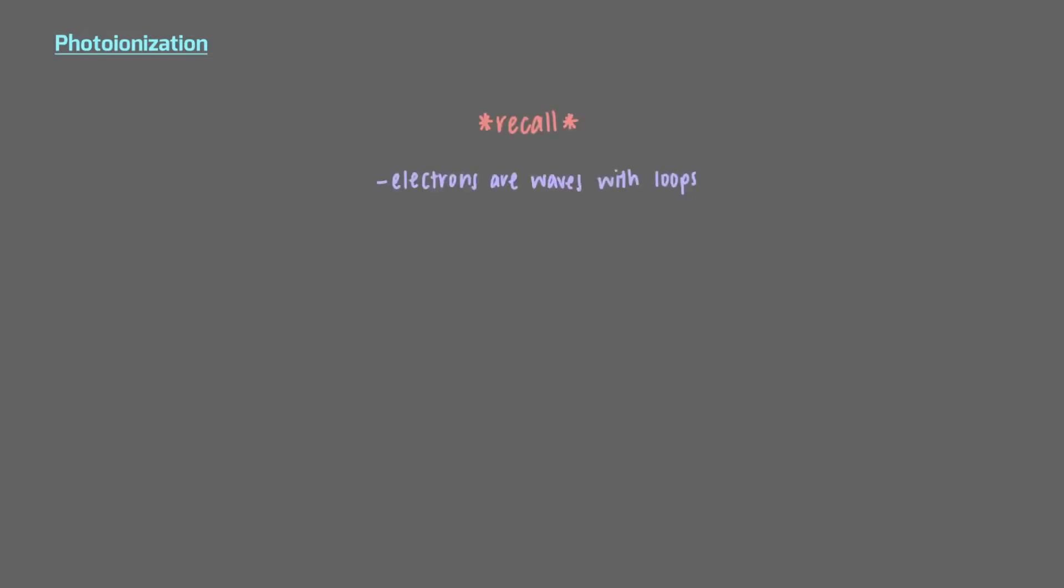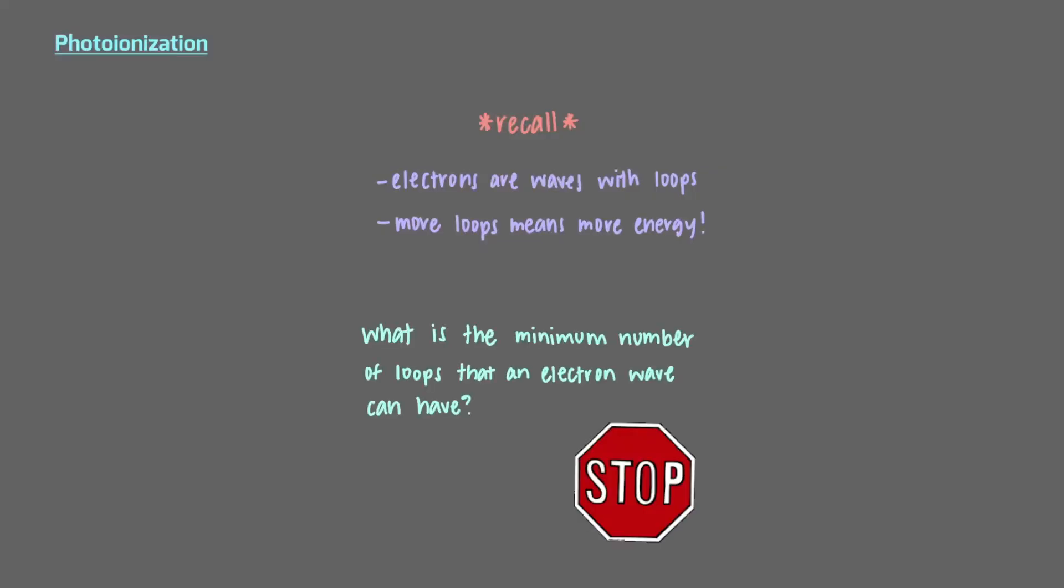Recall that we previously learned that electrons are waves with loops and that more loops means more energy. What is the minimum number of loops that an electron wave can have?